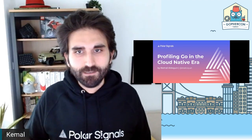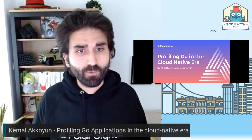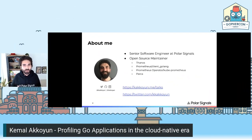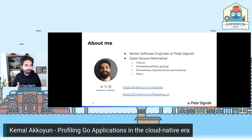My name is Kemal, and today I'm going to talk about profiling Go in the cloud native era. Before we start, I'll introduce myself. I'm a senior software engineer at Polar Signals — it's a small startup I recently joined. Before that, I was working for Red Hat, building observability tools for Red Hat infrastructure. I've been working in the infrastructure area for the past four years, building tools with Golang, and for three of those four years I mostly focused on observability tooling.